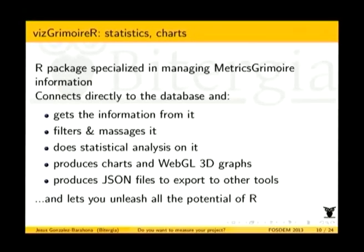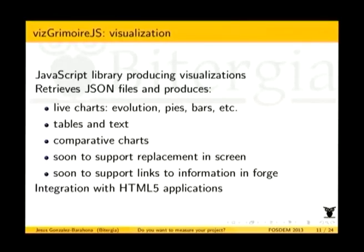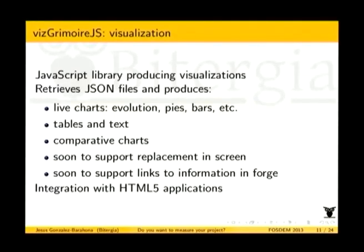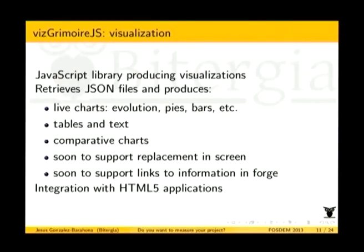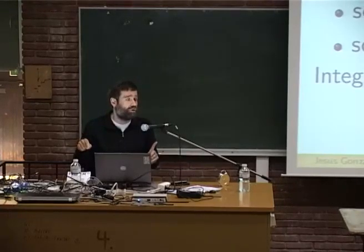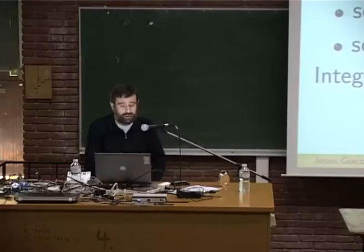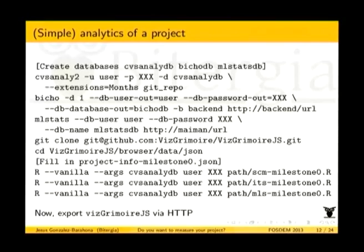The complete toolchain goes: get the information from repositories with Metrics Grimoire, analyze it with Biz Grimoire R scripts to produce JSON files, and then visualize the JSON files with Biz Grimoire JavaScript. The JavaScript component is a set of scripts mostly built on top of Flotr and similar libraries that produce visualizations — evolution charts, tables, text, comparative charts. We're also supporting interactivity in the screen so you can change things in the data, and in the coming weeks we hope to add direct links to the original repository so you can go directly to the Git web interface. It's very easy to integrate with HTML5 applications.